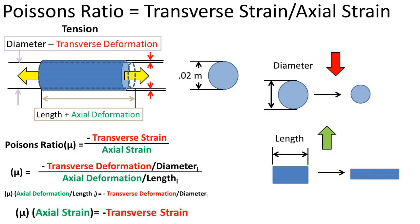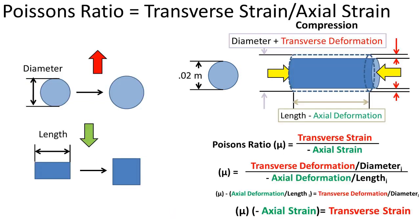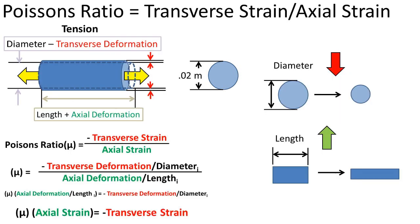Now it's useful to note that in tension, the diameter will decrease while the length will increase. So the transverse strain is negative while the axial strain is positive. On the other hand, under compression, the diameter will increase and the length will decrease. So the transverse strain is positive while the axial strain is negative. In our example, we are under tension, so the transverse strain will be negative and the axial strain will be positive. So the part will increase in length but decrease in diameter.